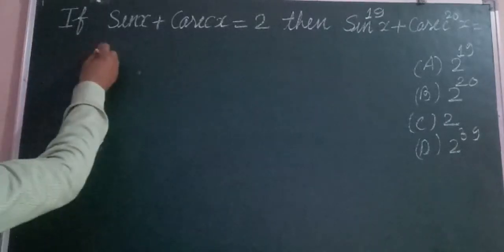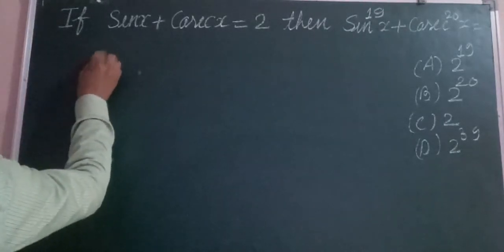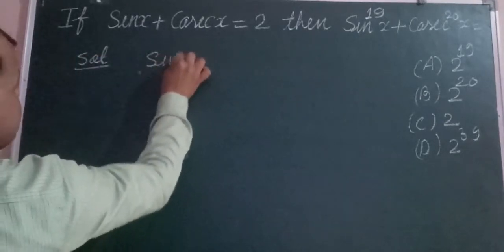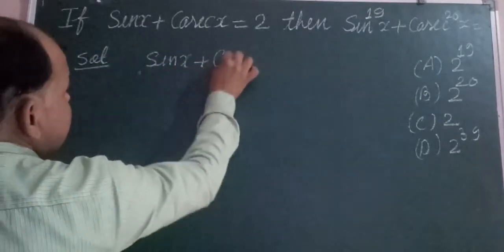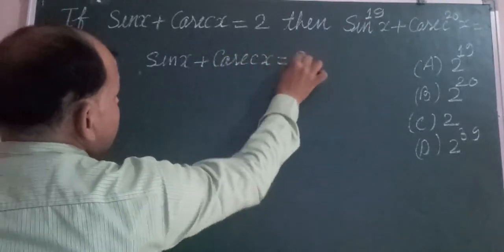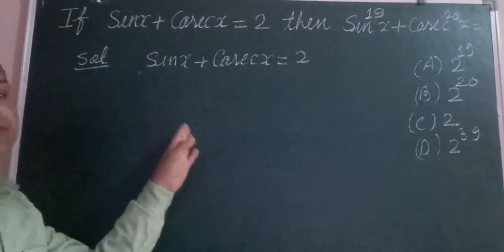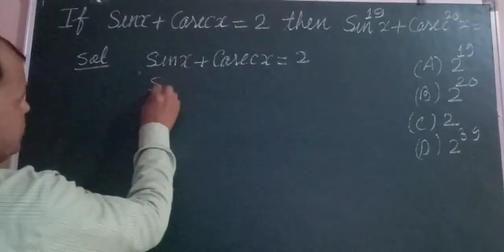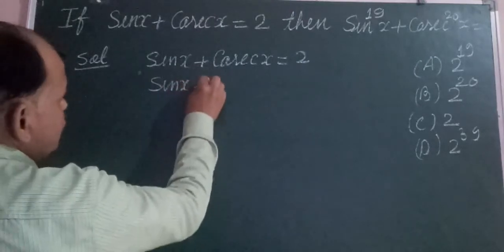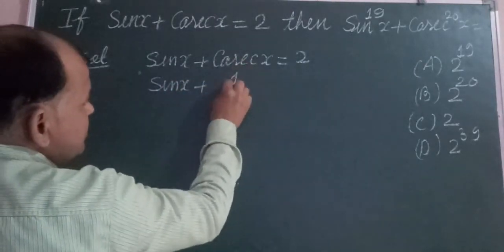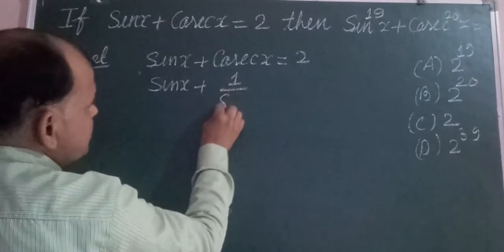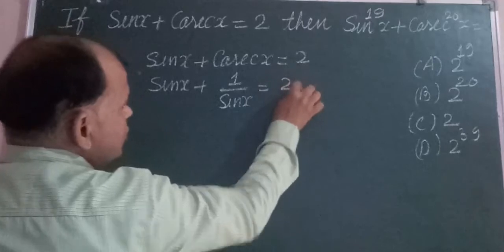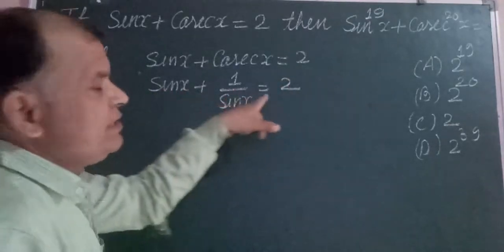Here students, we have sin x plus cos x equal to 2. What we do here is we change cos x into sin x. So we know that cos x is the inverse of sin x. We write sin x in place of cos x equal to 2, and now we multiply both sides by sin x.